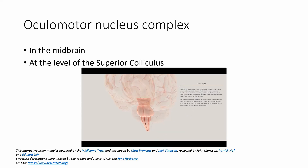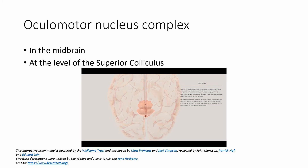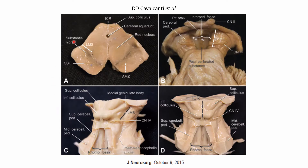The Edinger-Westphal nucleus is situated in the midbrain at the level of the superior colliculus, adjacent to the main oculomotor nucleus. As seen in this midbrain dissection, this is the superior colliculus, and it is at this level that the oculomotor complex, including the Edinger-Westphal nucleus, is situated.